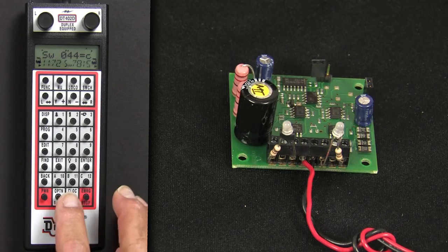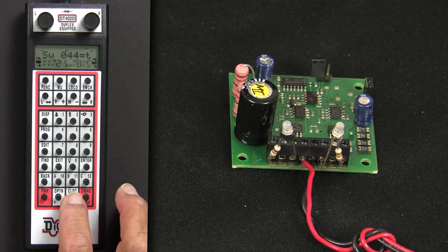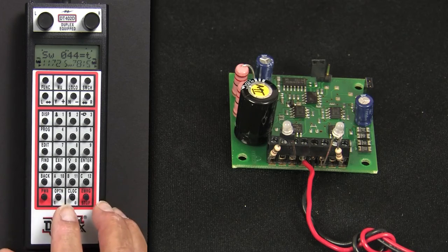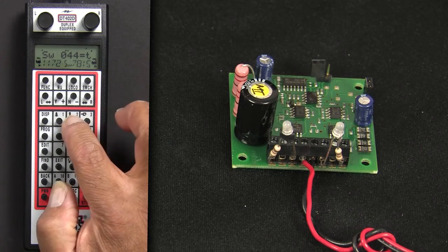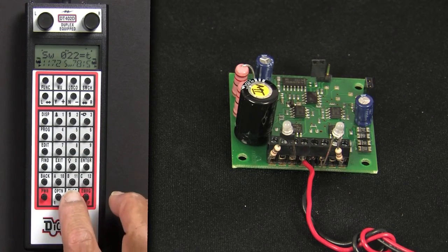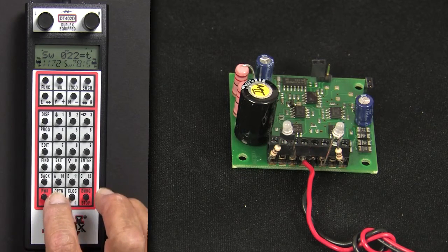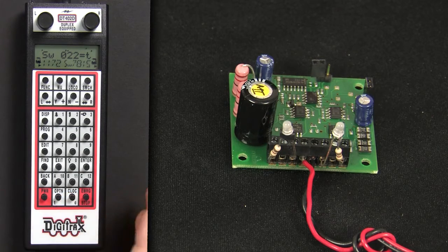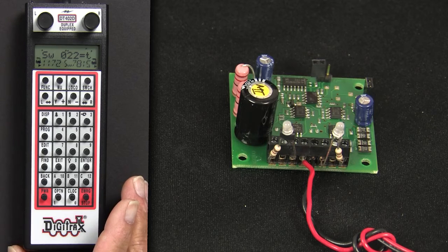44 gets a pulse, either in the plus direction or the minus direction for switch 44. Switch 22 operates in the plus and minus direction, and we now have twin coil switch machine programming complete.